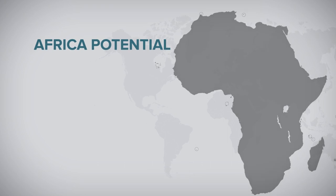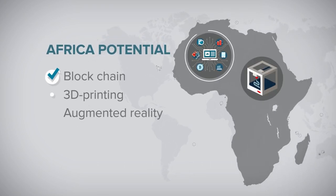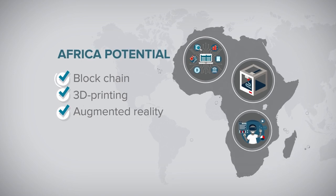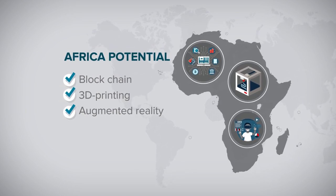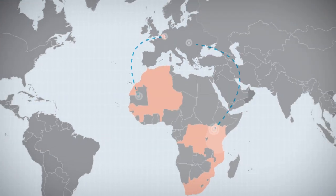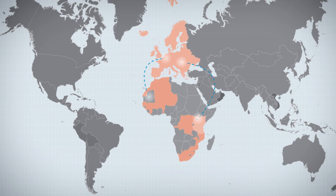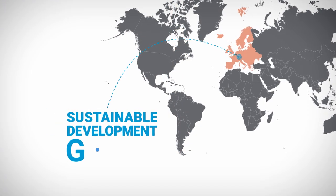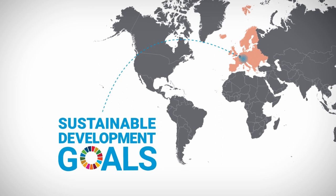In Africa, digital change is taking shape. Adverse technologies like blockchain, 3D printing, and augmented reality can trigger bigger development impact. Practices from Uganda and Africa can spread to Belgium, Europe, and inspire the world. The potential of digitalization is huge for achieving the sustainable development goals.